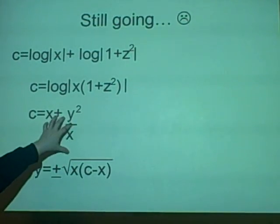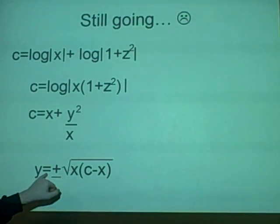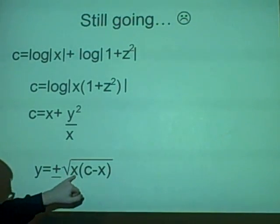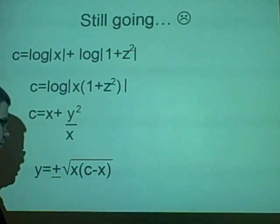And then we can rearrange this, moving the x up and the x over and square rooting to give y equals plus or minus the square root of x times c minus x, and that is how we get to our answer.